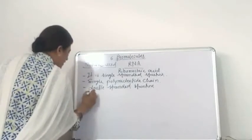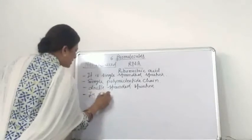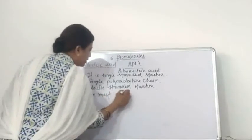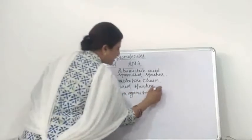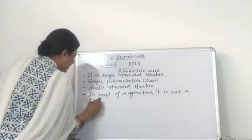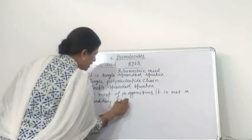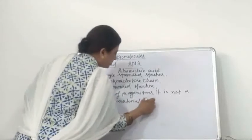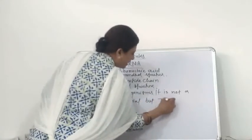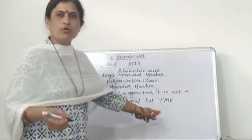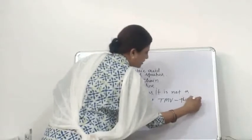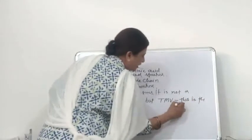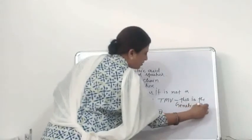In most of the organisms, RNA is not a hereditary material. But in the case of TMV, that is tobacco mosaic virus, this is the genetic material.